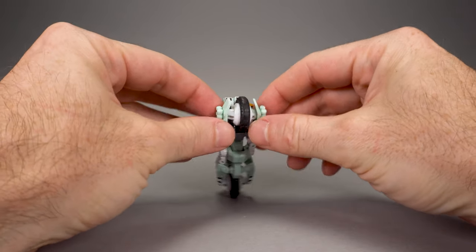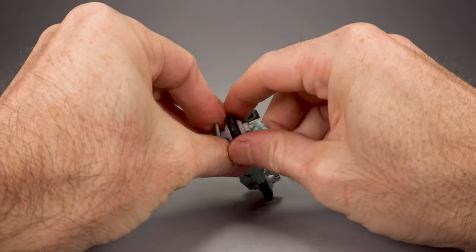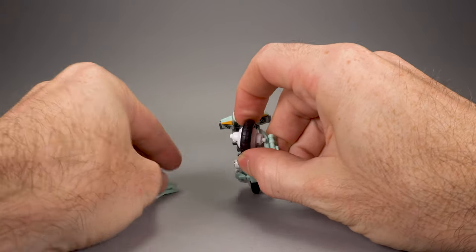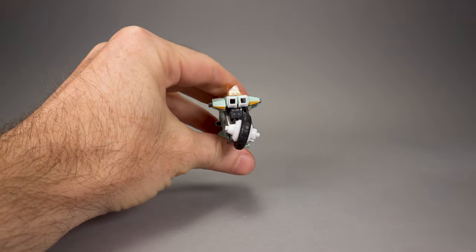We're going to begin by removing the bracers from either side of the front wheel and just take them aside like so.